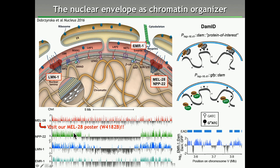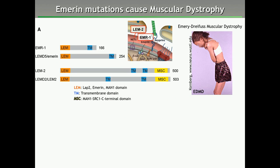We focus on Emerin because of its role in human health. Mutations in Emerin in humans cause Emery-Dreyfus muscular dystrophy, a devastating illness that is fatal to patients typically in the second decade of life due to heart failure. We also study LEM-2 because of its redundant function with Emerin during early C. elegans embryogenesis.